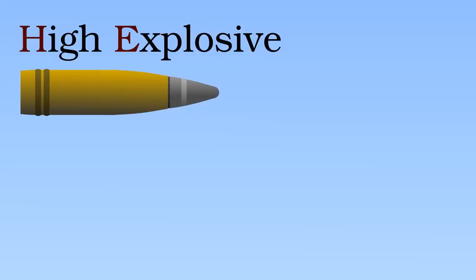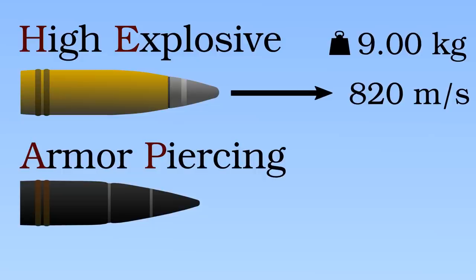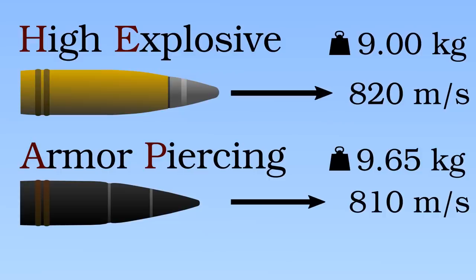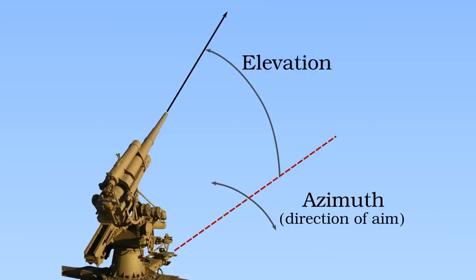The FLAC manual tells us that the muzzle velocity of the high explosive shell is 820 meters per second, or nearly 2,000 miles an hour. The armor-piercing shell, being slightly more massive, leaves the barrel at 810 meters per second. For now, I will consider the high explosive shell. Its muzzle velocity is fixed, meaning that the only things that a gunner can change are the direction the gun is aiming and the elevation angle. It is the elevation which determines the range of the shell, namely how far along it will impact the ground.